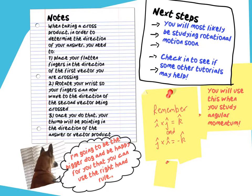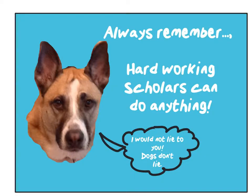Alright, one last time: when taking a cross product in order to determine the direction of your answer, you need to place your flattened fingers in the direction of the first vector you are crossing. Rotate your wrist so the fingers can now wave to the direction of the second vector being crossed. And once you do that, your thumb will be pointing in the direction of the answer or the vector product. You will definitely be using this if you are going to study angular momentum. And most likely if you're studying angular momentum, you're going to be studying rotational motion, so there will be tutorials dealing with rotational motion. And as usual, always remember: hardworking scholars can do anything.